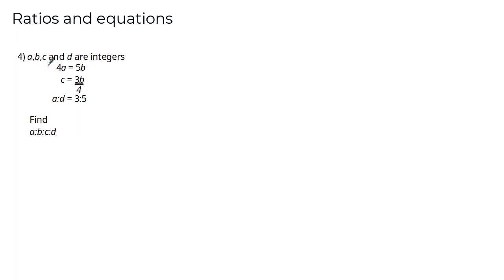Final question: a, b, c, and d are integers. 4a = 5b, c = 3b/4, and a:d = 3:5. Find the ratio a:b:c:d. Pause the video to have a go, then come back for the worked solution.